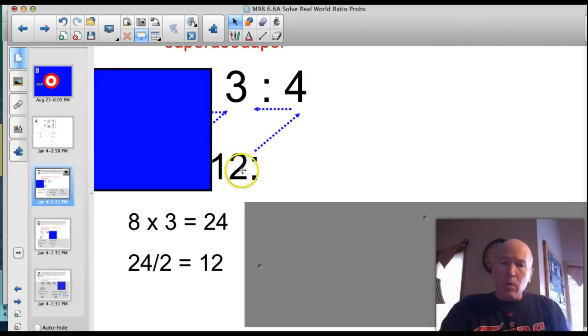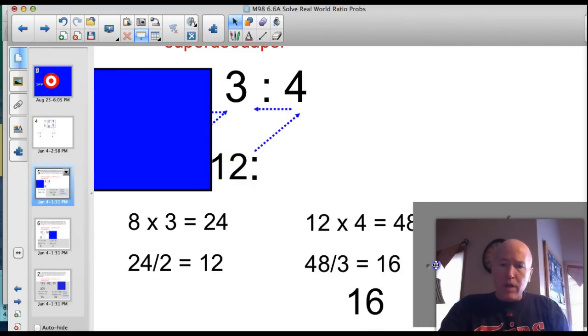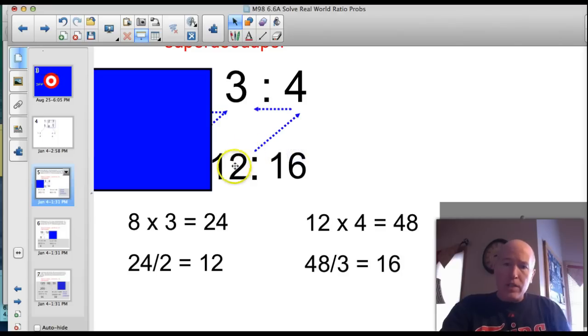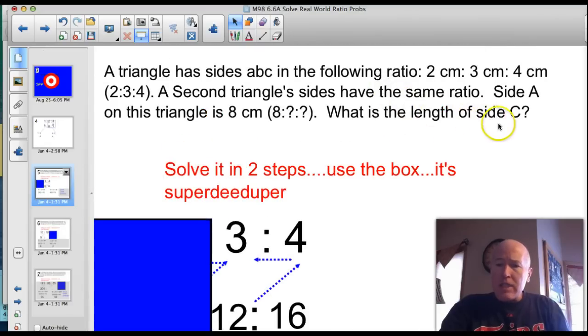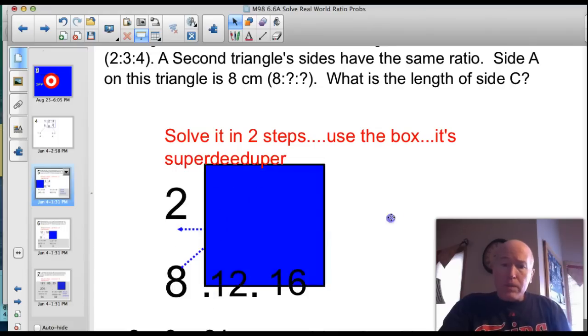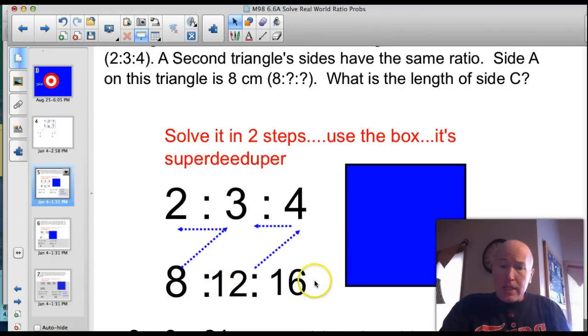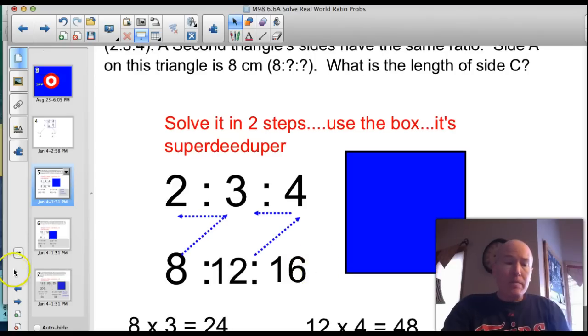There's our new number. Let's just double-check the cross-products. This is 24. 2 times 12. 8 times 3 is 24. So we know that that's correct. Now, we can just slide this over, and we can think about this ratio here now. We have to go 12 times 4. That would be 48. And then 48 divided by 3 would be 16. We can pop that guy in there and see if our ratios match this way. Or our cross-products match. 12 times 4 is 48. 3 times 16 is 48. What is the length of side C in this new ratio? This would be side A, B, and C. So the answer would be 16 centimeters.